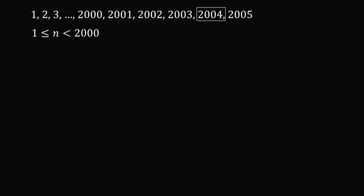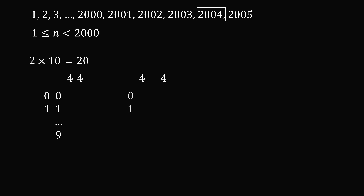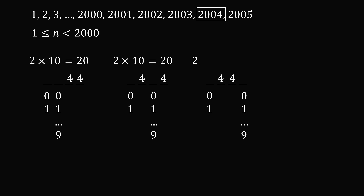Now let's consider the overlap cases. For a 4 in both the tens and ones columns: the thousands column has 2 possibilities and the hundreds has 10, giving 2 × 10 = 20. The same is true for 4 in the hundreds and ones columns, and for 4 in the hundreds and tens columns — each gives 20. For a number with 4 in the hundreds, tens, and ones spot, we have 2 possibilities for the thousands column, giving just 2.